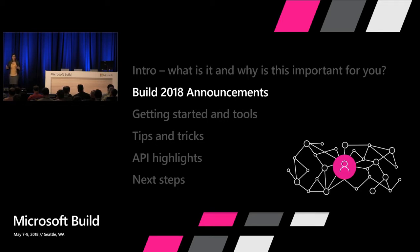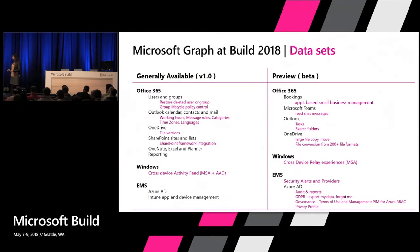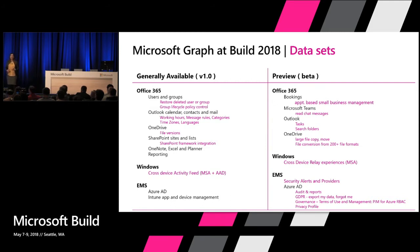Microsoft Graph has been around for three years, and every year we keep adding more data. I wanted to go over what's new for Build 2018. The next slides are going to be quite busy — I'm not going to cover everything, just a splash of things. I'll divide it into data sets and capabilities. For data sets, divided into Office 365, Windows, and EMS — all the things in pink are new capabilities in Microsoft Graph for Build 2018.